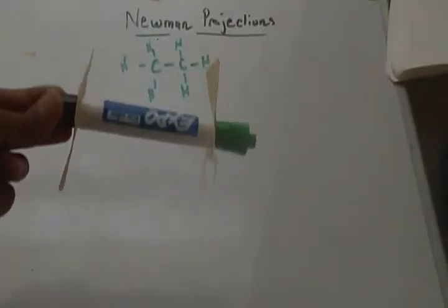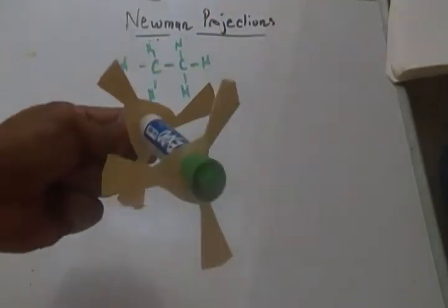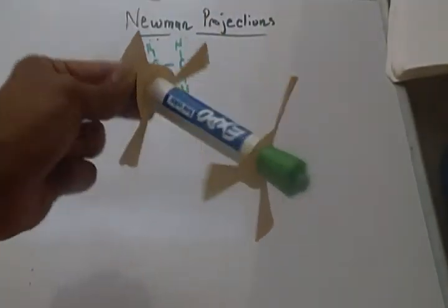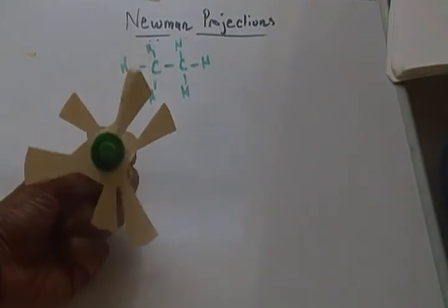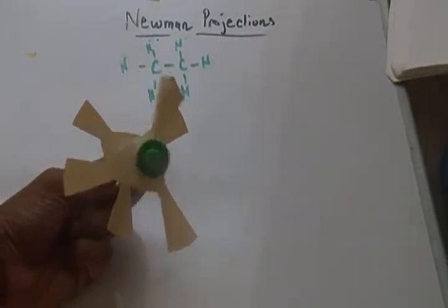As you can see, the black cap is representing one carbon, the green cap is representing another one. And the triangles coming off of it are just hydrogens. I hope you guys can visualize that.